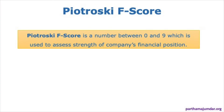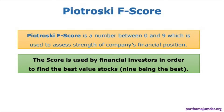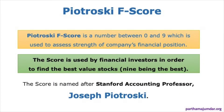As a bottom line, Piotrowski's F-score is a number between 0 and 9 which is used to assess the strength of a company's financial position — 0 being the least favorable and 9 being the most favorable. Piotrowski's F-score is used by financial investors to find the best value stocks to invest in. It is named after Professor Joseph Piotrowski who formulated this paper in 2002.